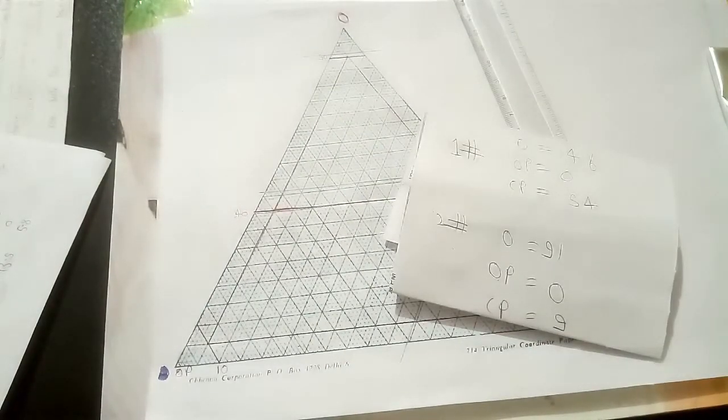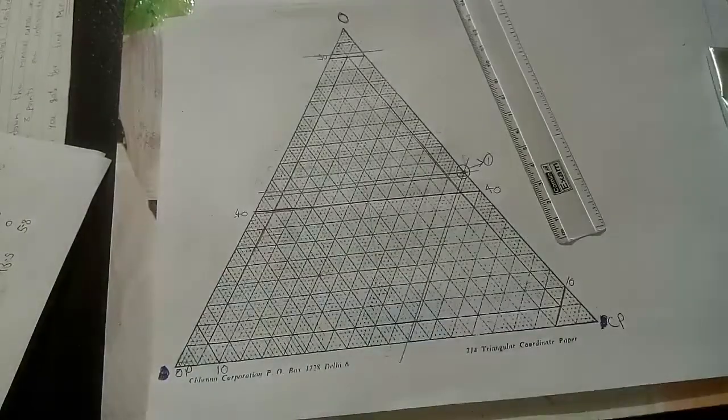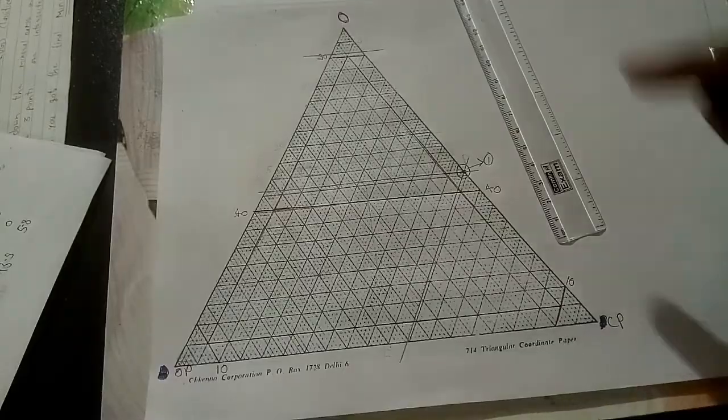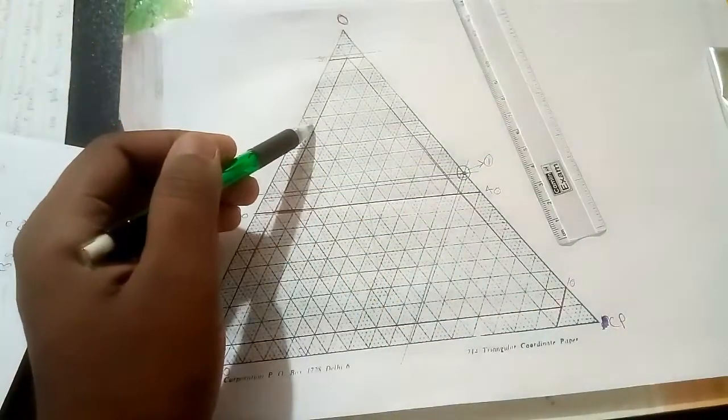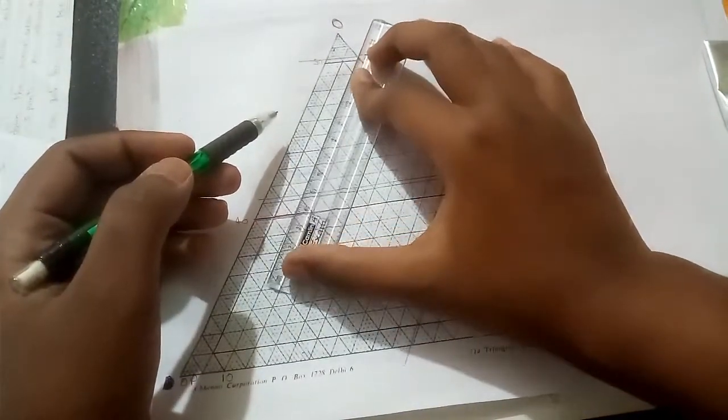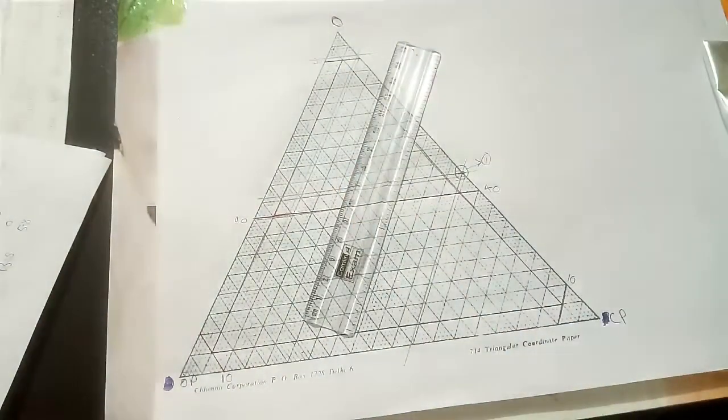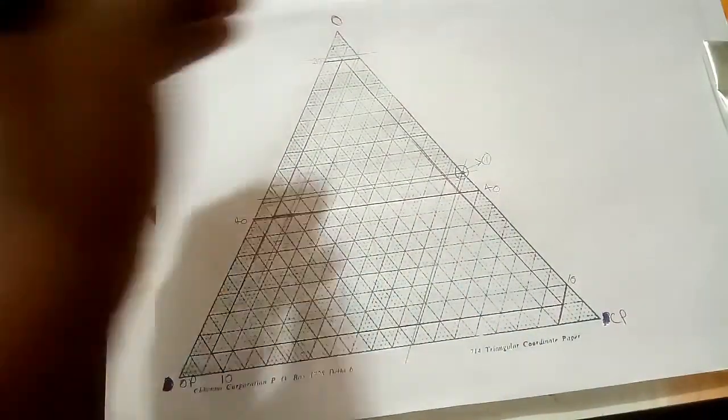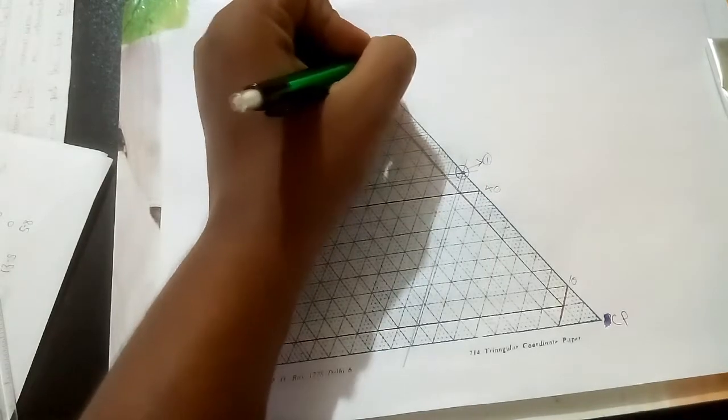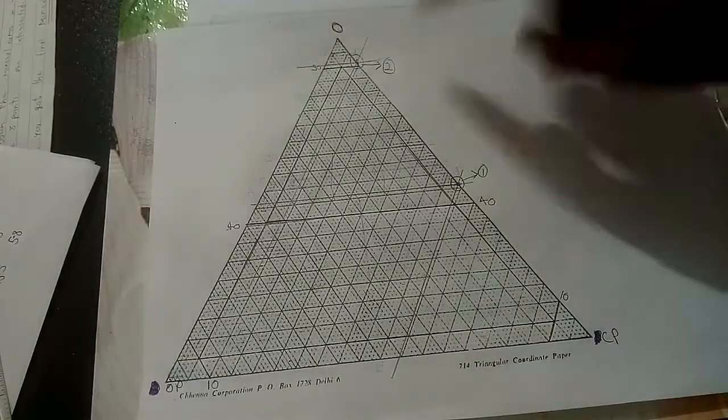And now the CP is 9. You can see here, right? CP is 9. Clinopyroxene is 9 now. Clinopyroxene is 100 here and 0 here. So this is 0, 5, 10. So one line before 10 will be the 9. So I will make it here. As you can see, all the 3 lines intersect at one point. That is this. I will make the circle and I will write here 2. You can see it. The first one is this and second one is this.